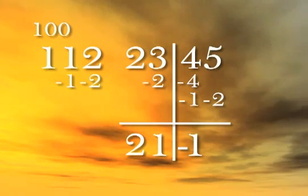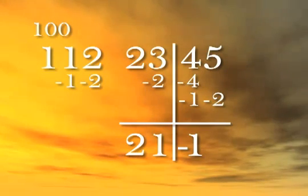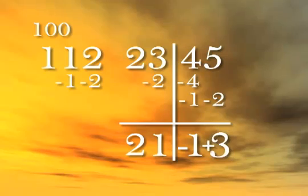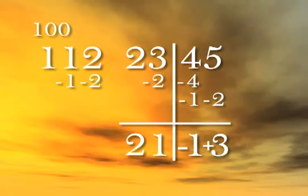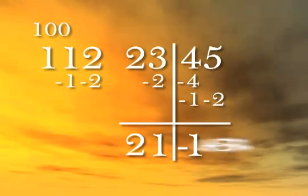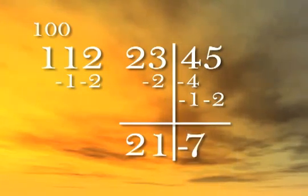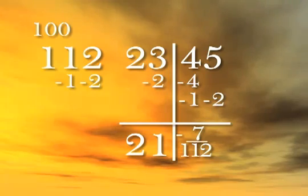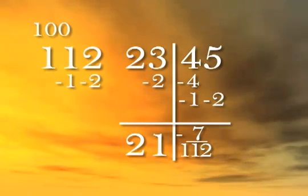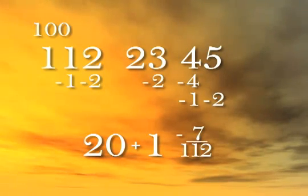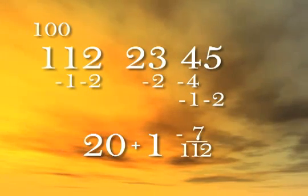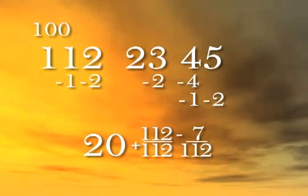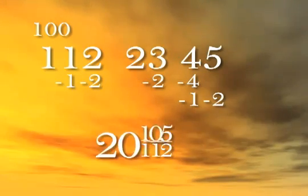Five minus two is three. But if we write it as three, then the remainder looks like negative thirteen — when in fact the last number is positive, so let's write it as positive three. We can't have a negative number in the remainder, so we keep working. The remainder is actually negative ten plus three, which equals negative seven. So the answer at this point is effectively twenty-one and negative seven over one twelve. That's the same as twenty plus one twelve over one twelve minus seven over one twelve, so the final answer is twenty and one oh five over one twelve.